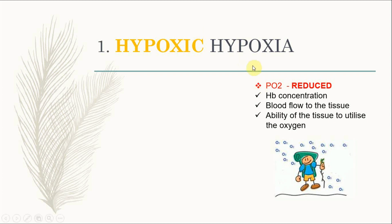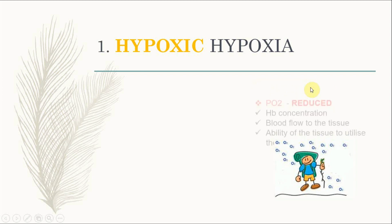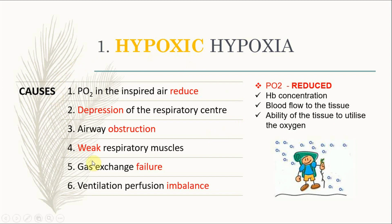Now we need to know what causes the partial pressure of oxygen to be reduced. These are all the causes: first, the partial pressure of oxygen in the inspired air is reduced — for example, when you wear a mask for a long time, the inhalation of oxygen is reduced. Second is depression of the respiratory center, which causes a reduction of respiration. Third is airway obstruction, when something is stuck in your respiratory tract. Fourth is weak respiratory muscles. Fifth is gas exchange failure. Sixth is ventilation-perfusion imbalance. When any of these changes occur, there will be a reduction of partial pressure of oxygen, thus causing hypoxic hypoxia.